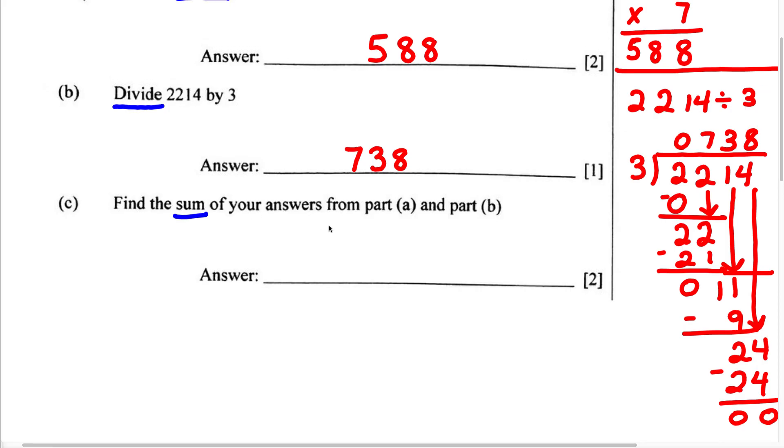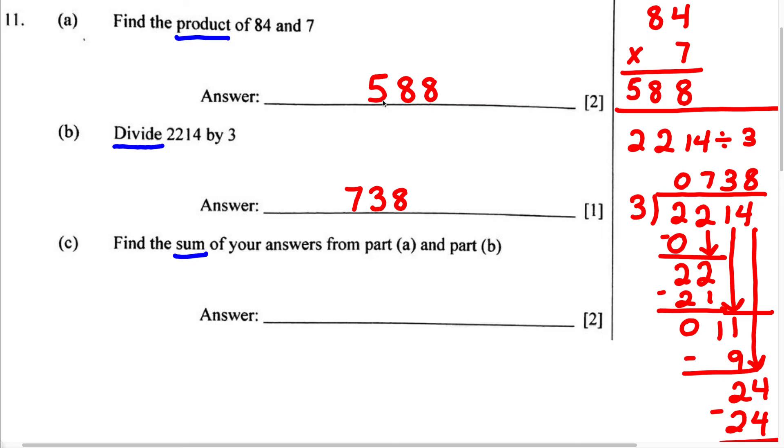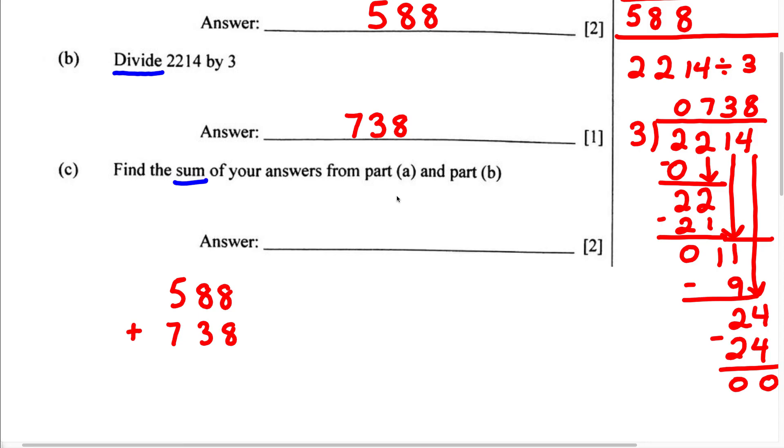Therefore, they want us to add the answer from part A and the answer from part B, and that's going to be our sum. So we can set this up as 588, which is the answer from part A, plus 738, which is the answer from part B. When we add this, we're going to get the sum.